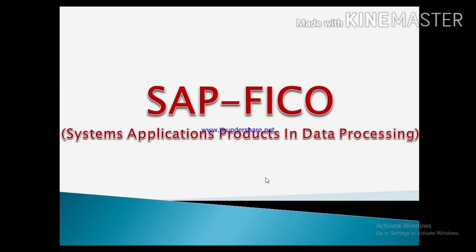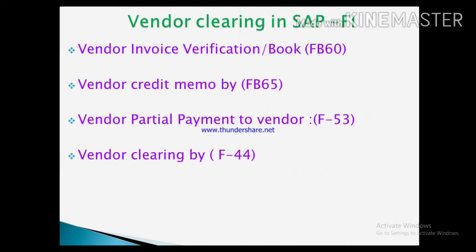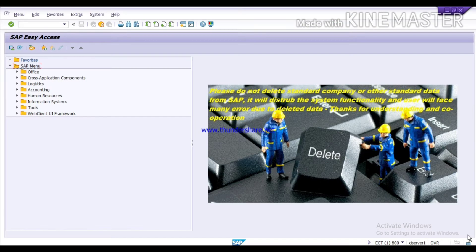Hello everyone, welcome to learn SAP FICO. Today we will learn about vendor clearing. First of all, we will book one invoice under the T code FB60, as we have booked earlier also. Run the T code FB60.